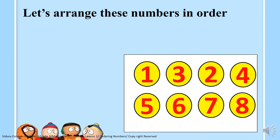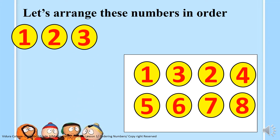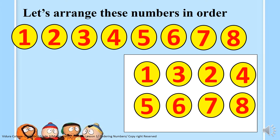What has happened? All the numbers that we had before are all jumbled now — they have all been put into a box. Now you have to arrange these numbers in order. So, how can we arrange them? We take number 1 from the box and put it on top. Then the next number would be 2, 3, 4, 5, 6, 7 and 8. Now these numbers are in order. Excellent.